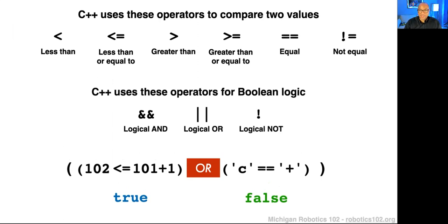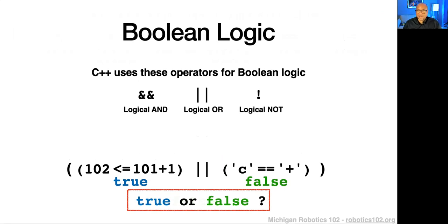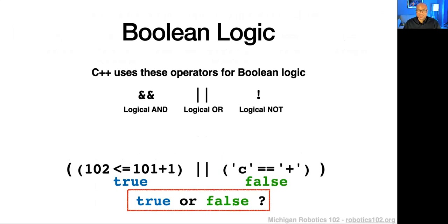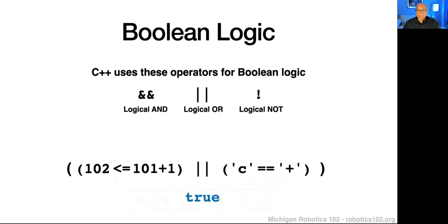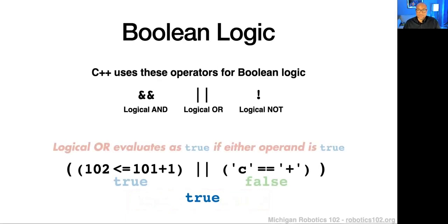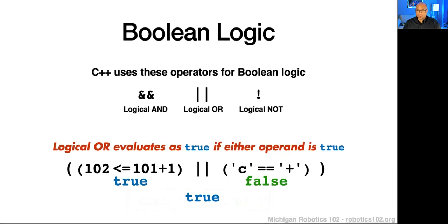If we put an OR in using these two vertical lines, we can evaluate both things together. Is this true OR that true? In this case, the whole thing should be true because one of them is true. Logical OR will evaluate to true if either operand — the thing on either side — is true. We compare that with logical AND, which will evaluate to false if either operand is false. So if one's true and one's false with AND, the whole thing will be false. It has to be both true for AND to evaluate as true.